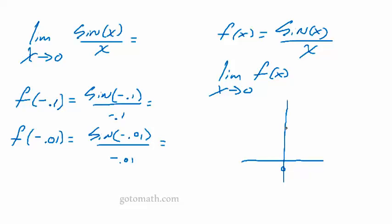Where does it cross up here? Who knows? But what we could do is do this numerically and plug numbers in, getting real close to 0 from the left-hand side. And of course, that's what I'm doing here.